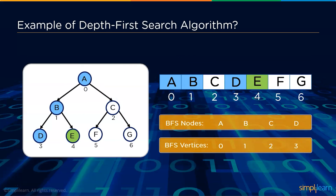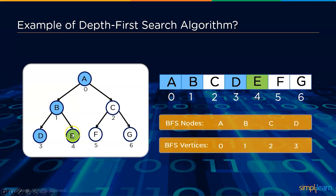To understand DFS working, consider a graph. The root node is chosen first. DFS starts from the left subtree — it visits B but does not stop there. It directly explores the depth of B, entering its left child node D. Since D has no further children, it backtracks to B and checks the right side. It finishes the left subtree completely before entering the right subtree, where it finds node E.